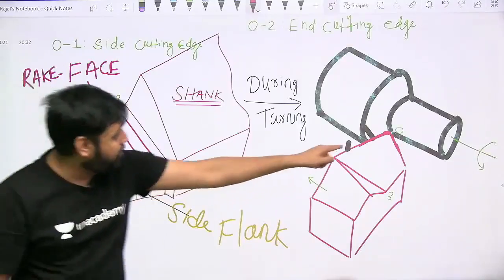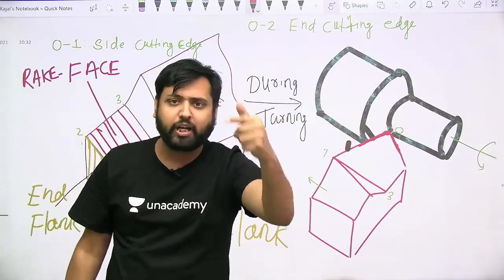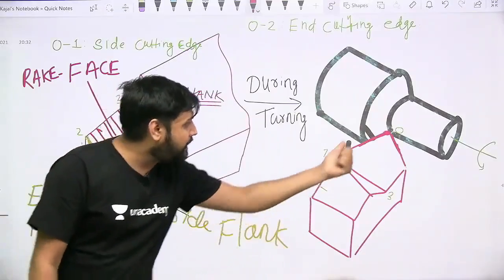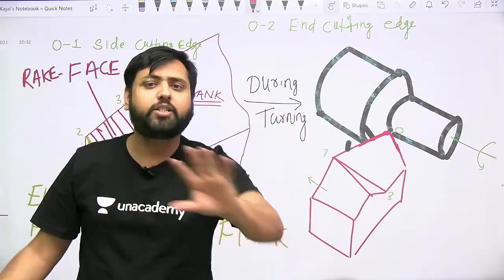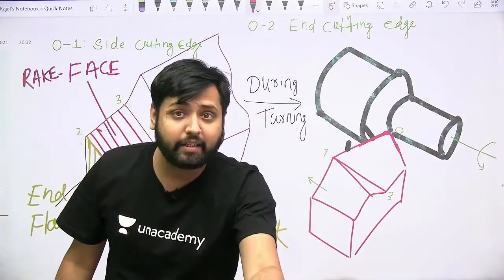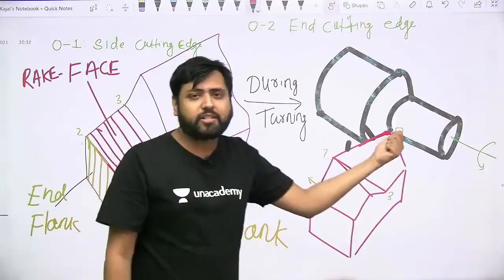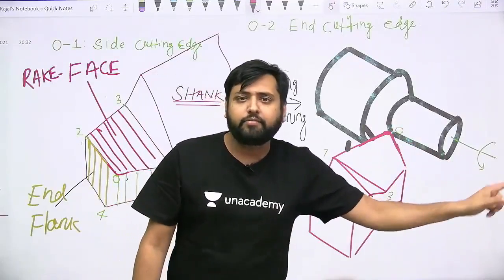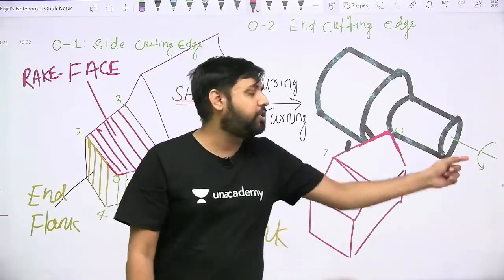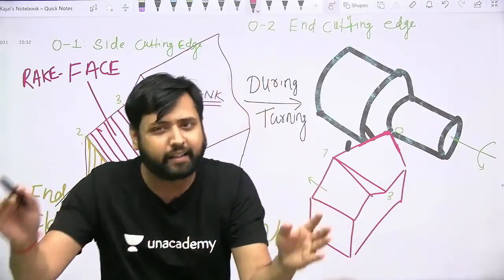You know, if this tip of the tool will be made sharp, as soon as the cutting tool will come in contact with the workpiece, that sharp edge, because of very large amount of stress concentration, will break. And if it breaks, then you can understand what will be the surface finish of the machined surface. It will be deteriorated.